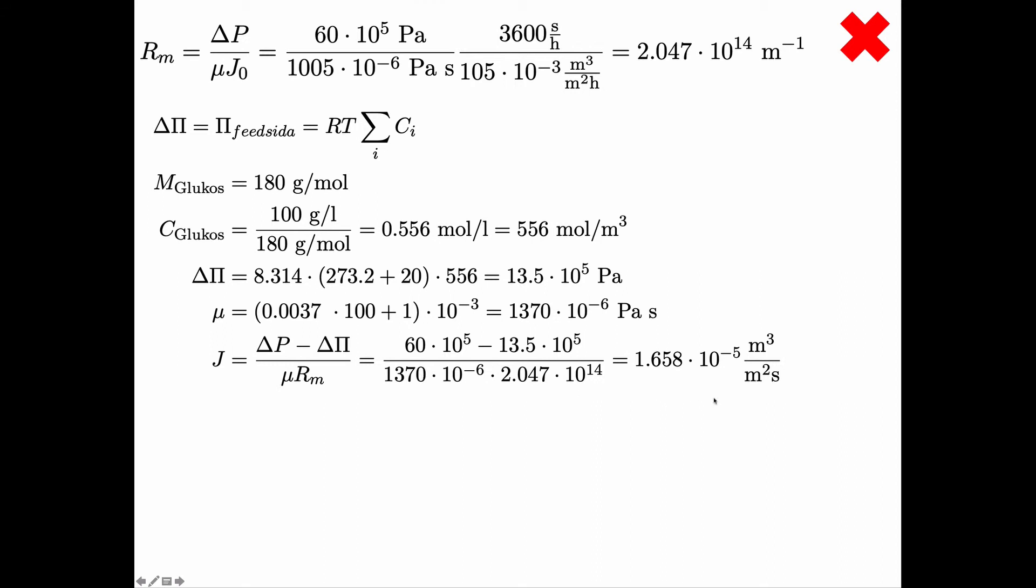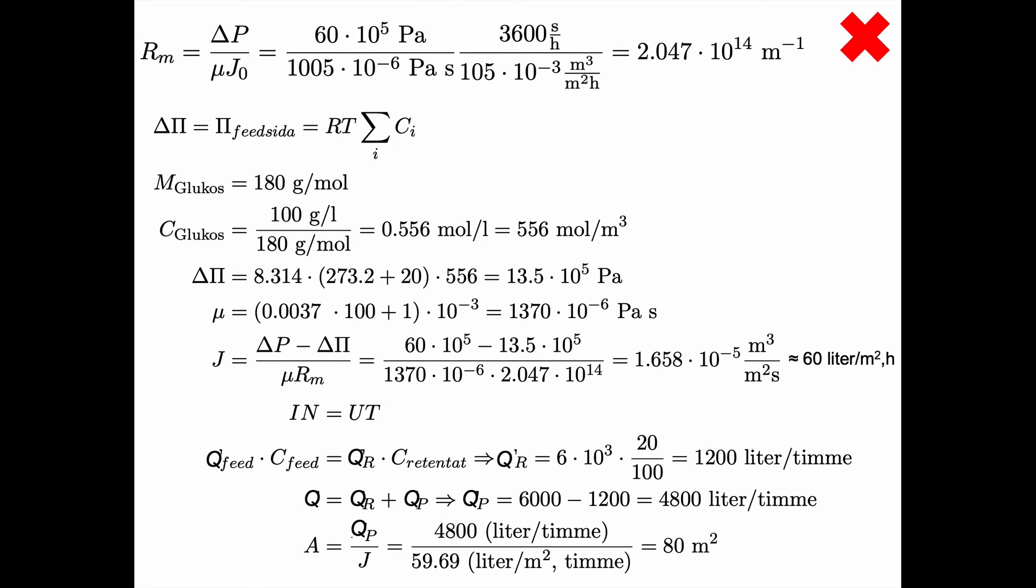We put in the viscosity here, we calculate it and you get 1.658·10⁻⁵ cubic meter per square meter and second. If you translate that to liter per square meter an hour you get approximately 60 or slightly less than 60 liter per square meter an hour. To get the required area we need to make a mass balance.